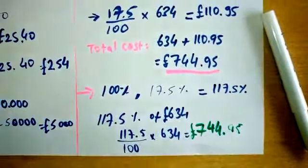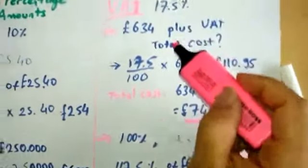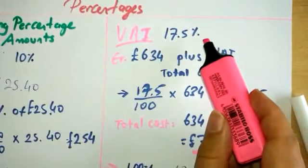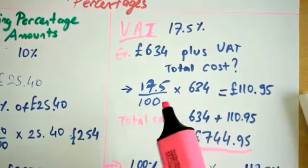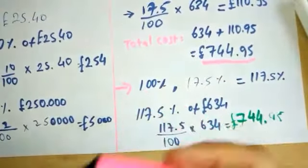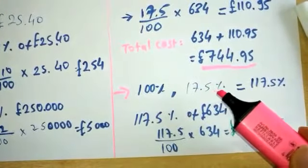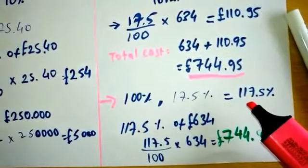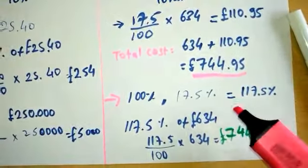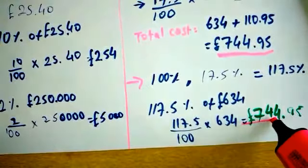As you see, you can work either this way - you can first find 17.5% and then add to your total cost. Or you can think the total cost as 100% plus VAT, which will be 117.5%, and calculate 117.5% of the initial cost £634, and you will get straight away the same answer.